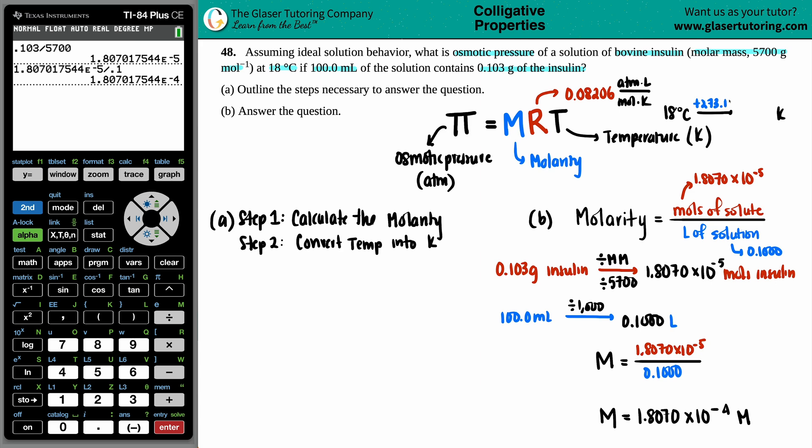That's just plus 273, or we could add 273.15. So 18 plus 273.15, we get 291.15. So we got molarity, the R value, and the temperature. We can solve for osmotic pressure.